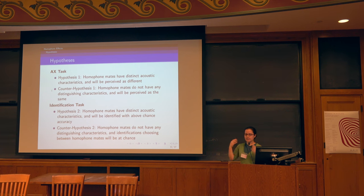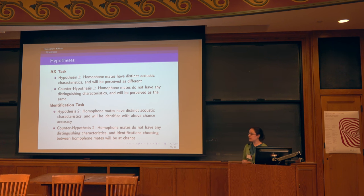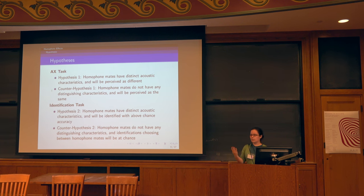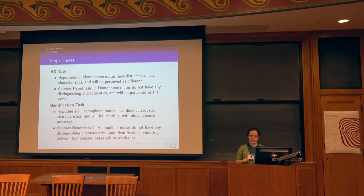Basically, the question is: to the extent that there are acoustic differences, can listeners pick up on them? If there are differences listeners are sensitive to, then in the AX task the homophone mate pairs will be identified as different more often than the same pairs — whether it's sun/sun versus sun/son. Another possibility is that homophone mate pairs behave just like same pairs with no difference. In the identification task, the question is: will people be any better than chance at deciding which of the two homophone mates they heard?